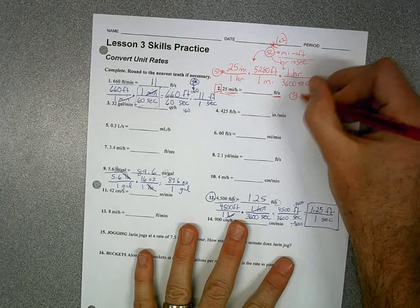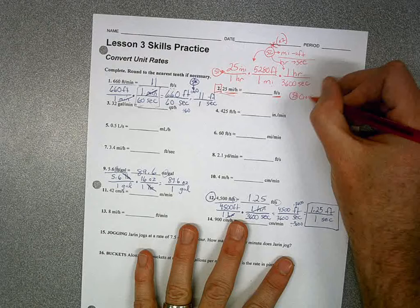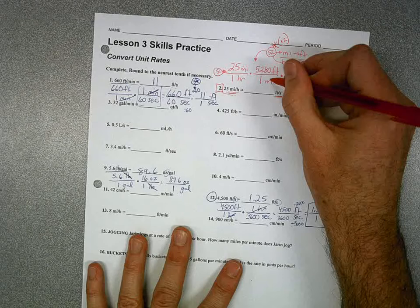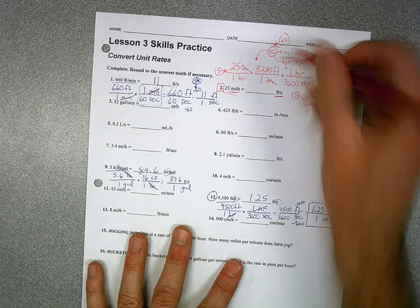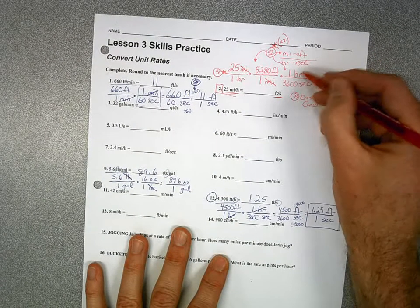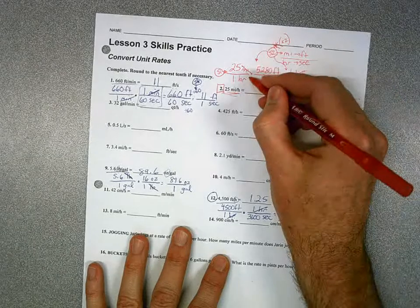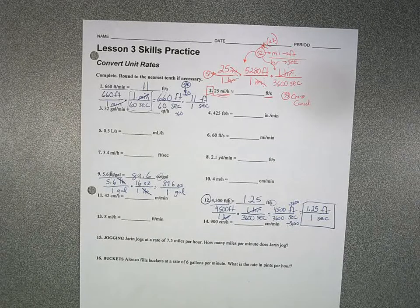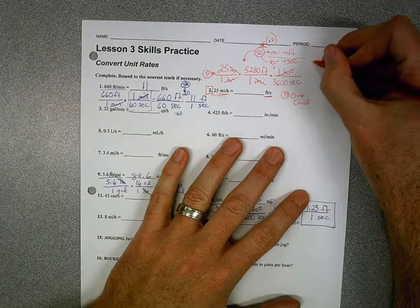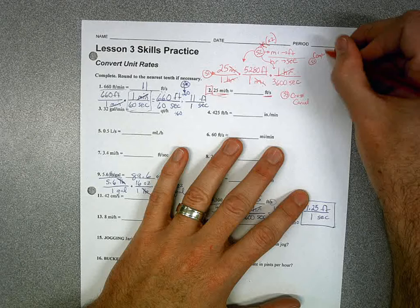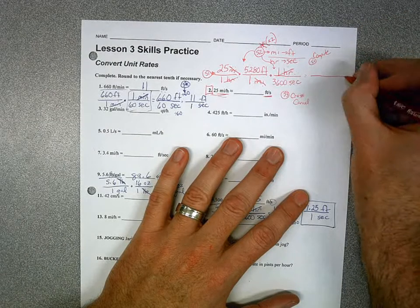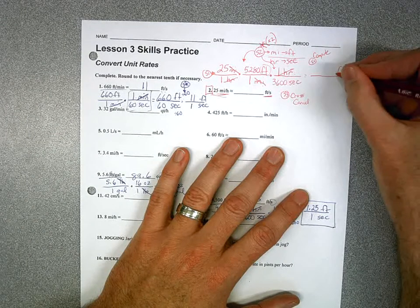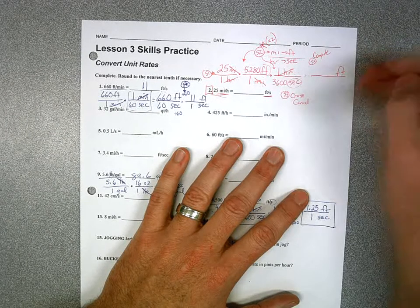Step three — the fun part, because if you set it up right, this is the easiest part. We're going to cross-cancel. Miles cross-cancels with miles, and way over here the hours cross-cancel with the hours. Step four: look at your units. On top, feet are left. On the bottom, seconds are left.